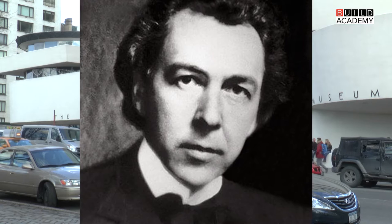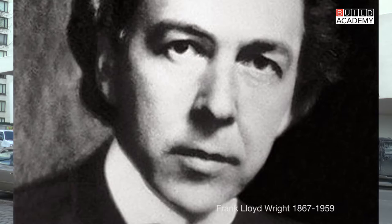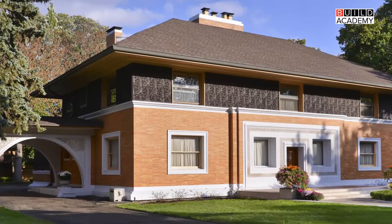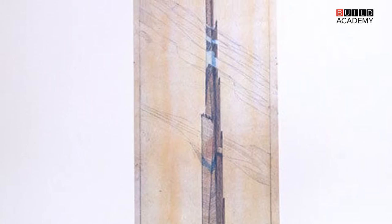Wright was born in 1867 and died in 1959, so he lived through the latter part of the 19th century and the entire first half of the 20th century. In his first house on his own, the Winslow House, there are stables in the back. And then in 1956 he did a project for a mile-high building to be powered by atomic energy. So we see this huge technological span that Wright lived through.